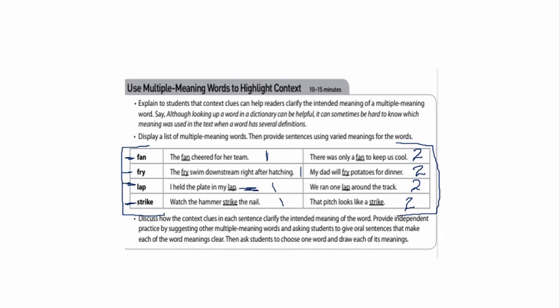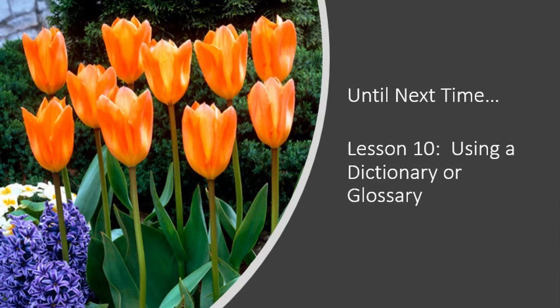This activity should take about 10 to 15 minutes. Remember, you have additional instructions at the bottom on how you can apply and practice the use of multiple meaning words to highlight context using context clues. Until next time, take care. Bye-bye.